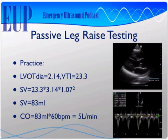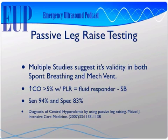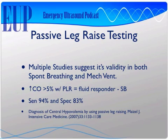So now that I've got a cardiac output, how is that going to help me manage the patient? Multiple studies suggest the validity of passive leg raise testing is pretty good in spontaneous breathing. This study from Intensive Care Medicine 2007 concluded that in spontaneously breathing patients, an increase of cardiac output by 5% with a passive leg raise makes you a fluid responder. So you measure the cardiac output, do the passive leg raise, measure again, and if it changes more than 5%, their heart liked that extra 500cc's. That's a 94% sensitivity — I think 10% is better, which increases specificity to about 95%.